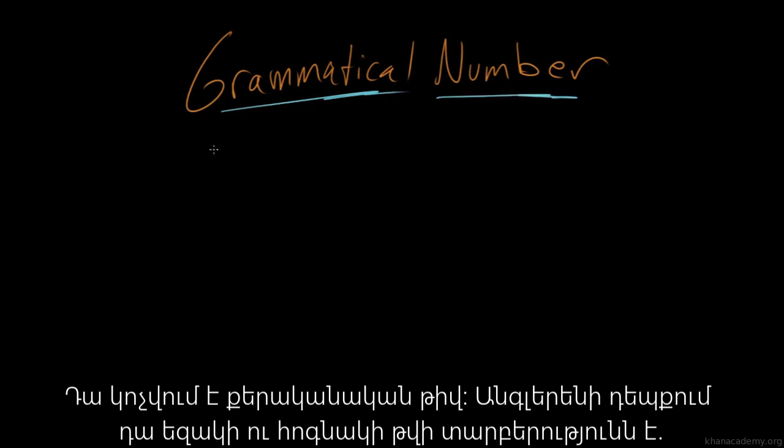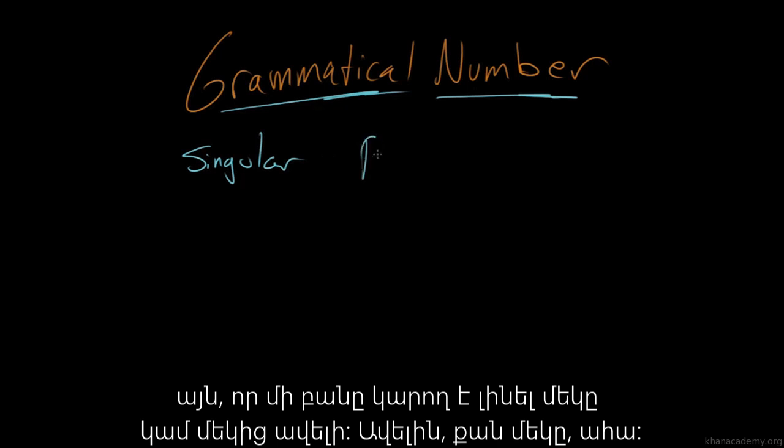And the way this plays out is in the difference between singular and plural in English. The idea of there being one of a thing or more than one of a thing.